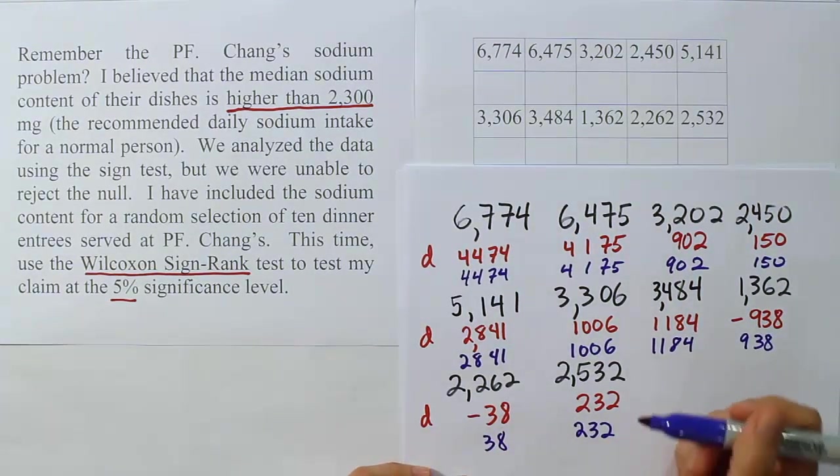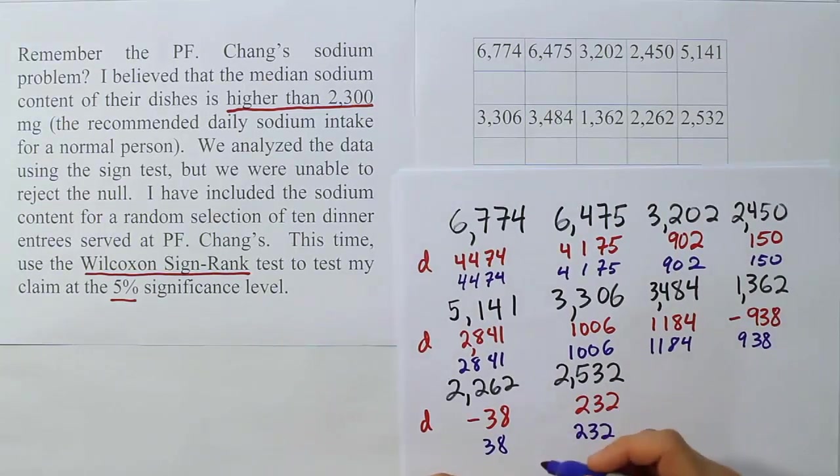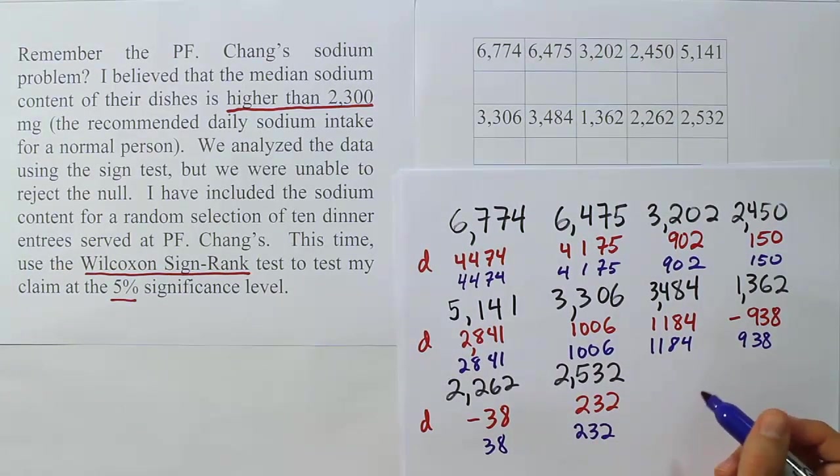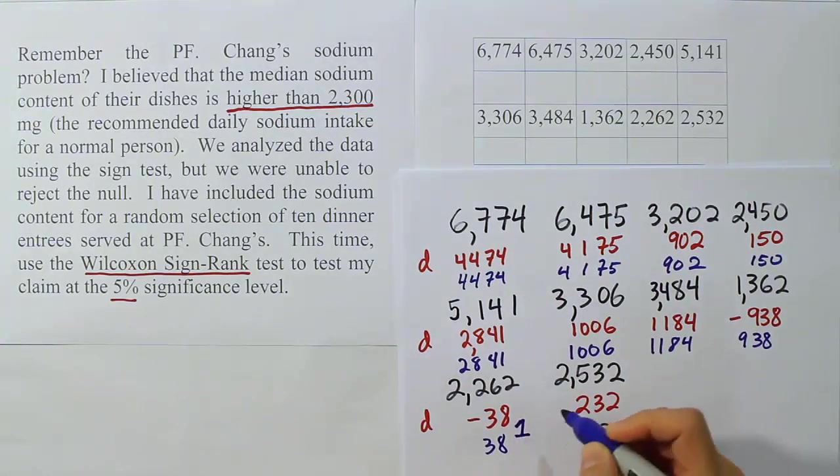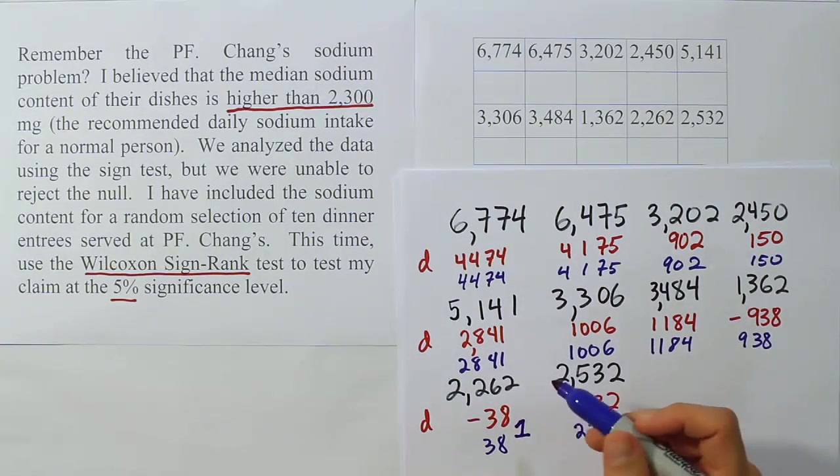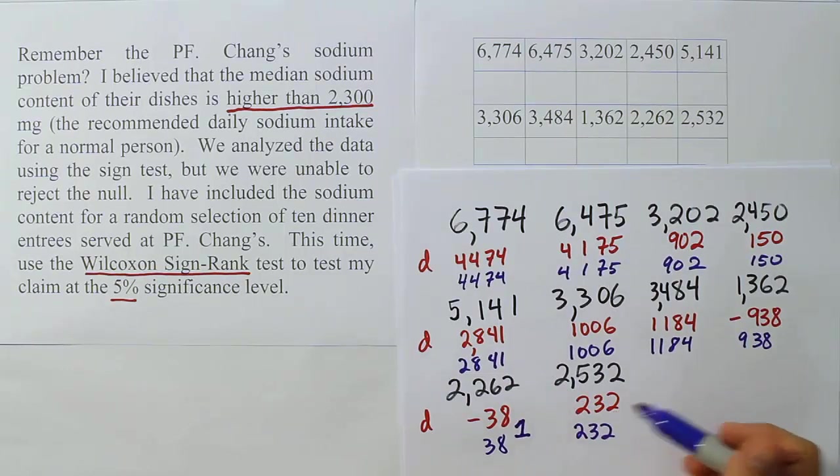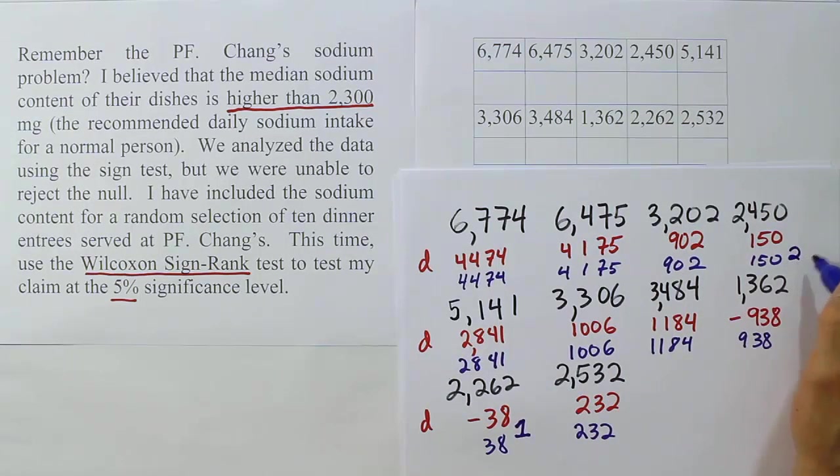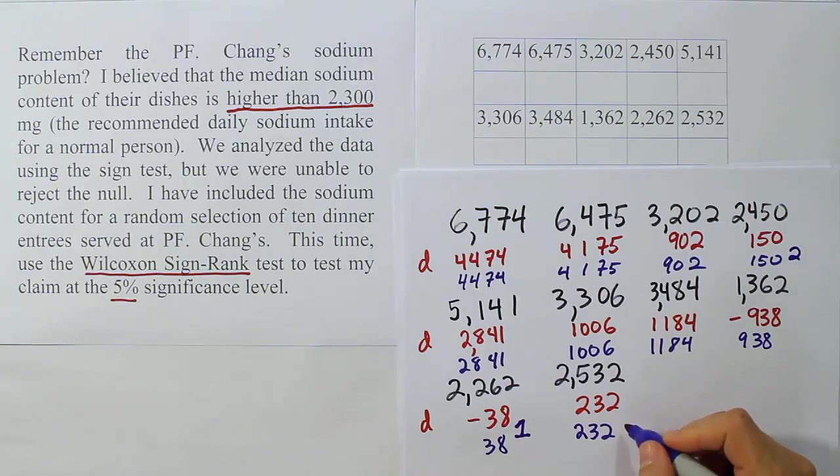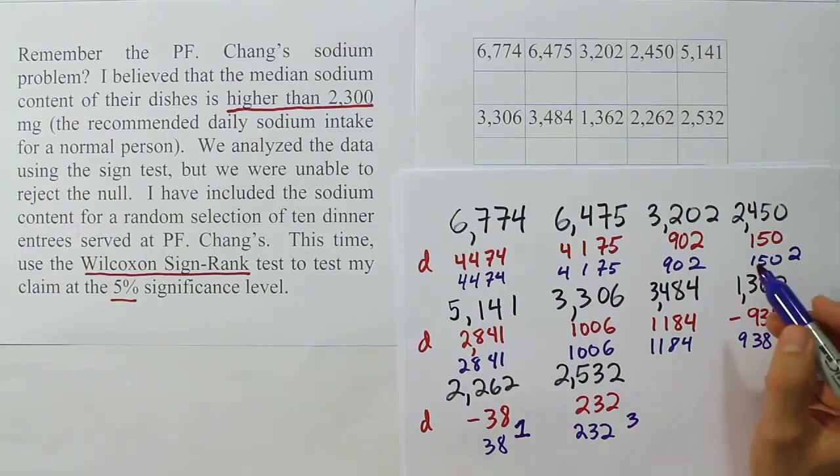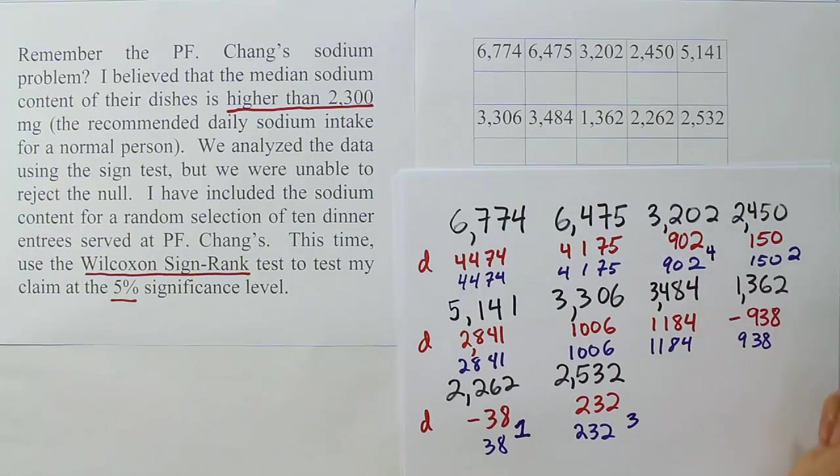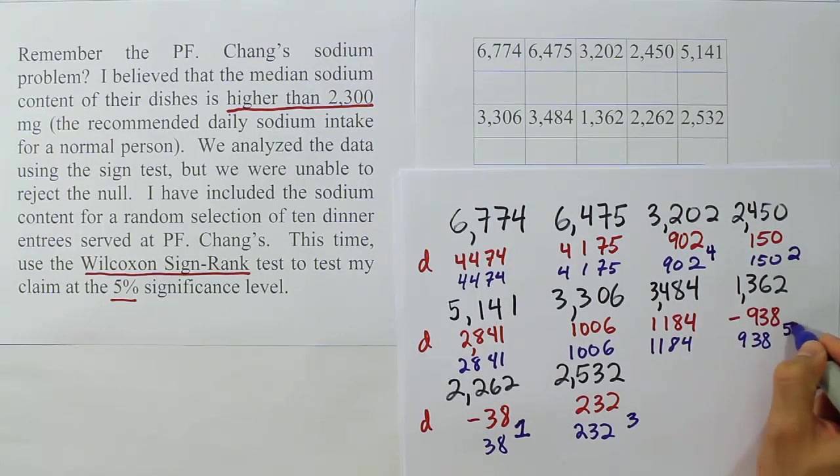Now we need to rank them. So I'm going to put a little rank next to each value. Look at the smallest number on the list. What's the smallest number in blue that you see? I think it's 38. So let's give this guy rank number one. Let's give the next number that's smallest on the list. I think 150 is the next smallest. That's rank number two. This will be rank number three. The 232, I think that's the next smallest. Then after 232, I think it's 902. So that would be rank number four. Then 938 would be the fifth ranked number.